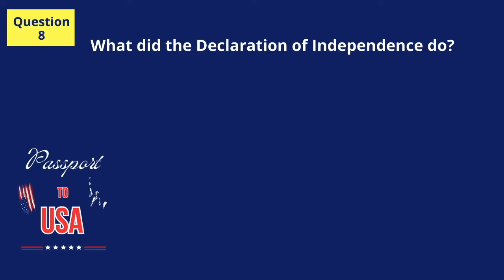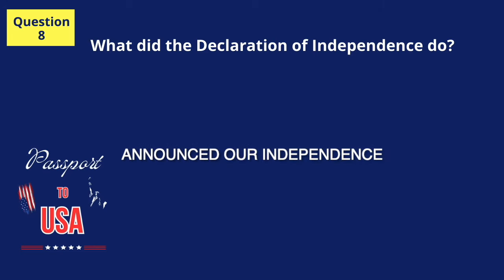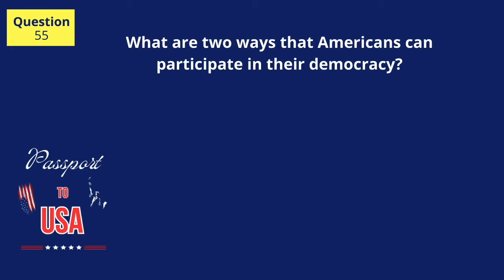What did the Declaration of Independence do? Announced our independence from Great Britain. What are two ways that Americans can participate in their democracy? Vote. Join a political party.